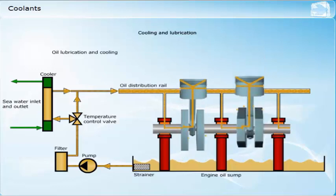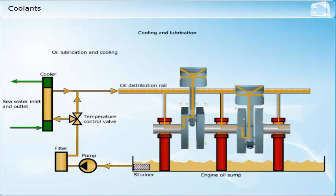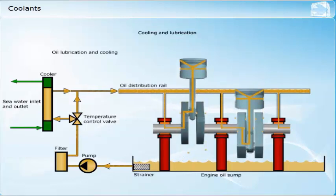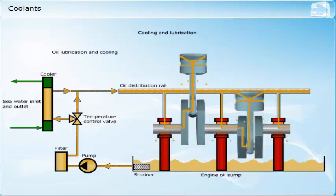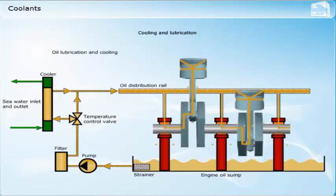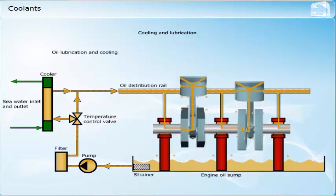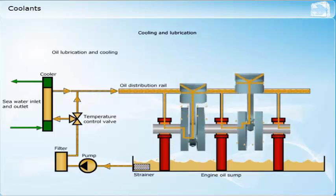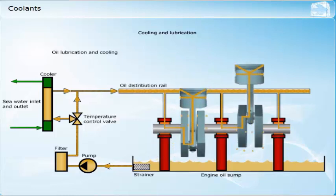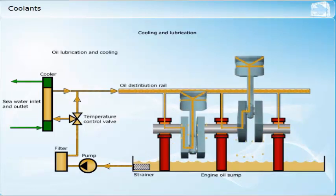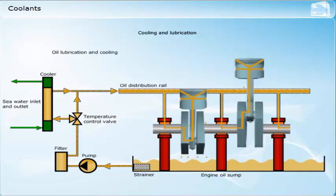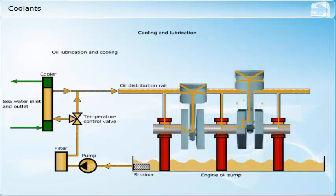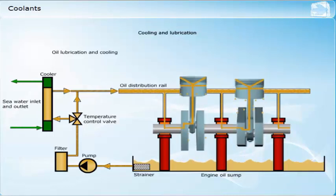The primary purpose of lubricating oil is to form an oil film between two moving surfaces, and so reduce friction. In doing so, the oil heats up, partly due to the friction of the oil molecules moving across each other under load, and partly due to heat transfer from hot engine components.